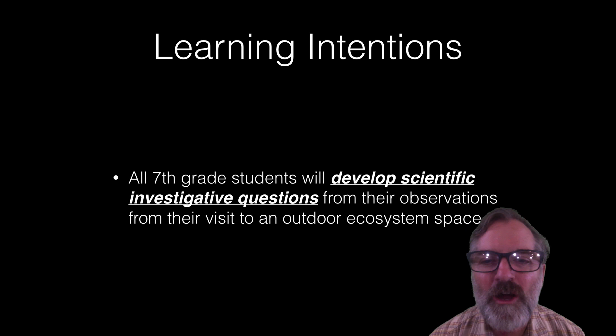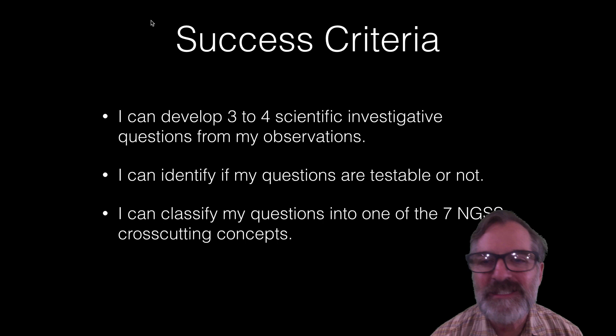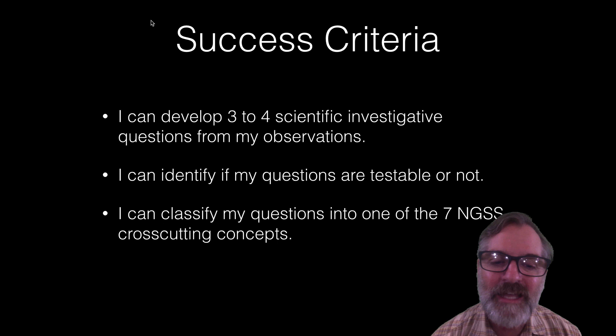Here are our learning intentions. All seventh grade students will develop scientific investigative questions from their observations from their visit to an outdoor ecosystem space. The success criteria is what you should be able to do after the lesson: I can develop three to four scientific investigative questions from observations, I can identify if my questions are testable or not, and I can classify my questions into one of the seven NGSS cross-cutting concepts.